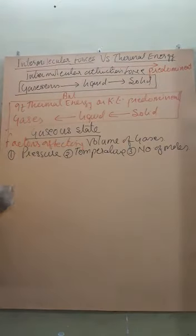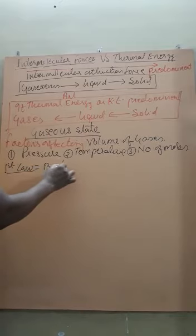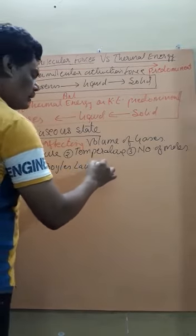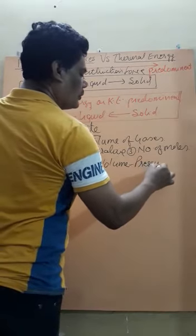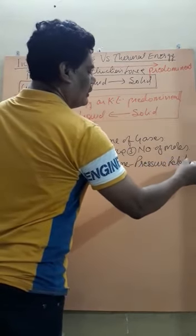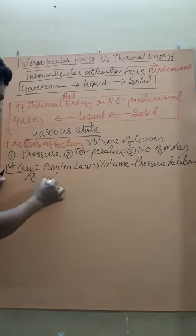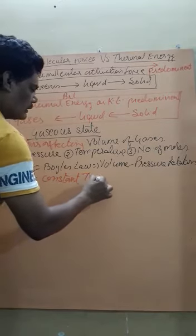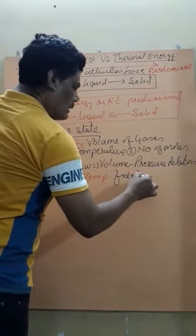That means we have to check one by one the relation between any of the factors with the volume. So the first law is known as Boyle's law, which is the volume-pressure relationship. According to it, at constant temperature, with a fixed amount of gas,